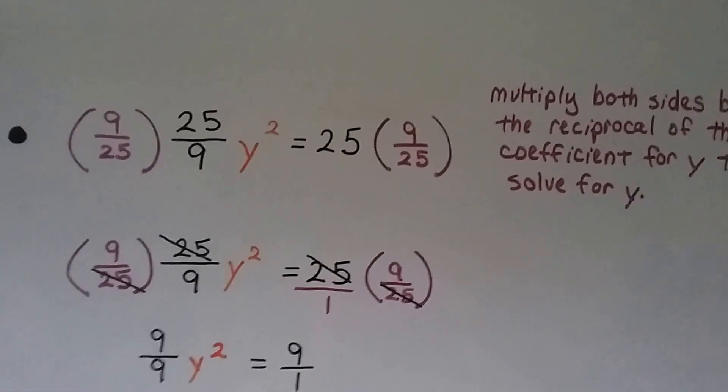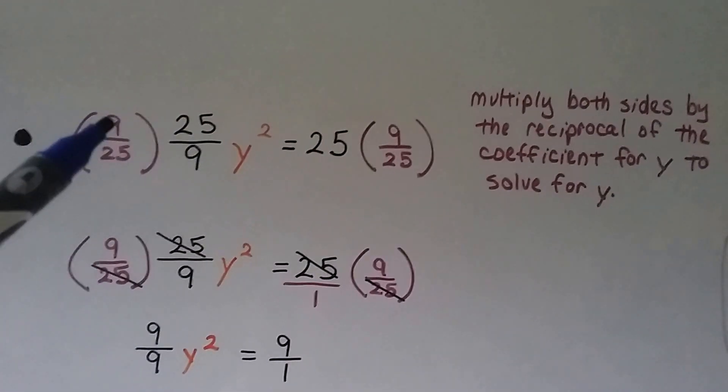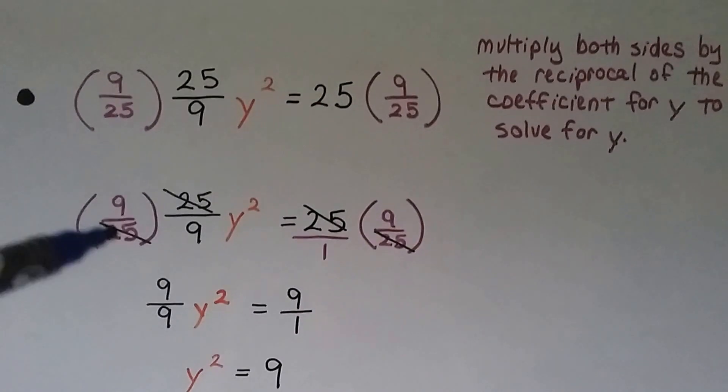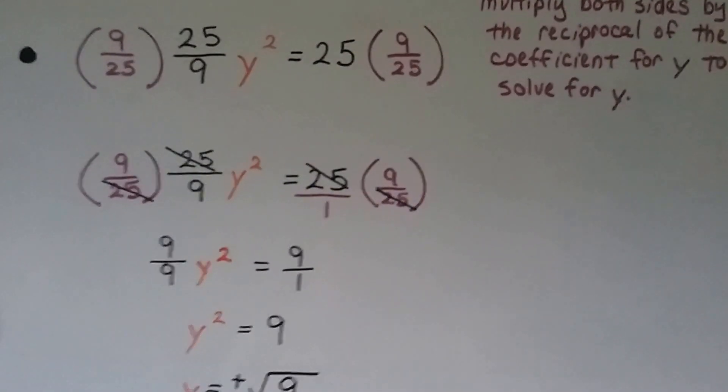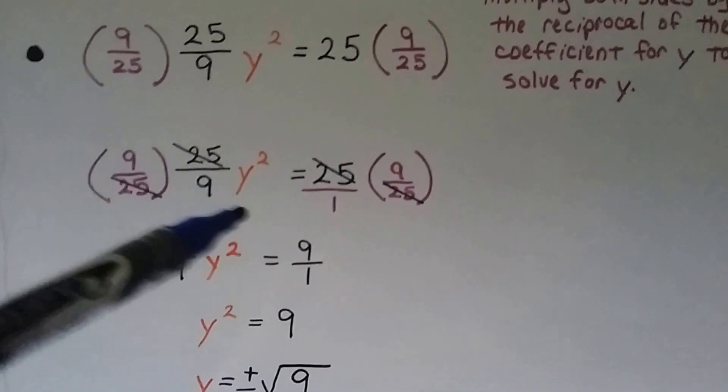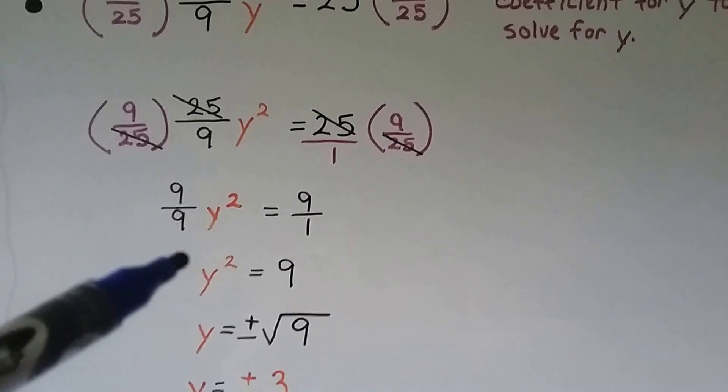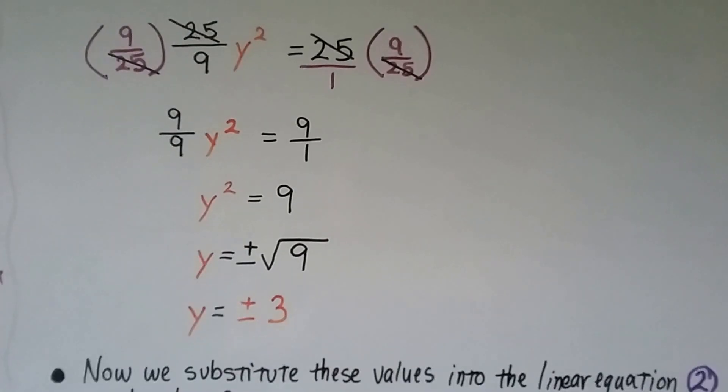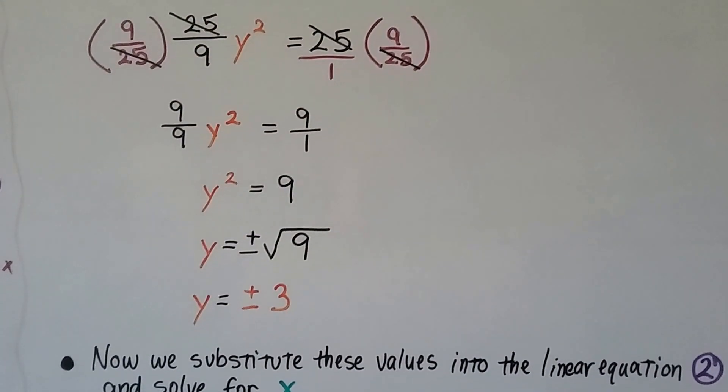Now what we're going to do is multiply both sides of this equation by the reciprocal of the coefficient. The reciprocal of 25/9 is 9/25. We can cancel out these 25s and these 9s. This is going to give us 9 on this side. So we've got y² = 9. Put the radical sign around the 9, and we've got plus or minus the square root of 9. So y = ±3.